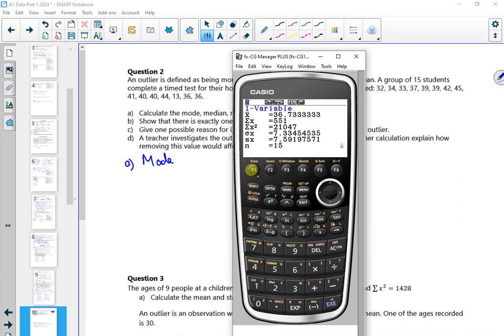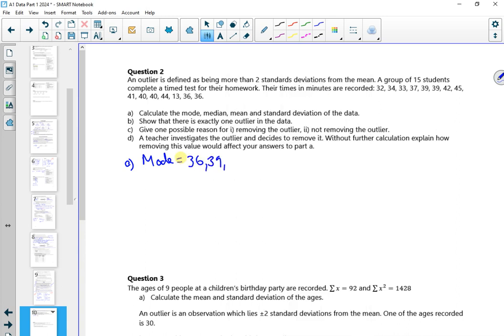Right, so if I just do the one there and go down, there's my lower quartile, median, and upper quartile. Look, it gives me different modes here: 36, 39, and 40 as a mode. So there's more than one mode on that question. So my mode is 36, 39, and 40. It gives the median as 39, the mean as 36.7, and sigma as 7.33.